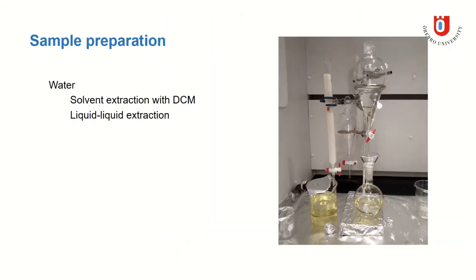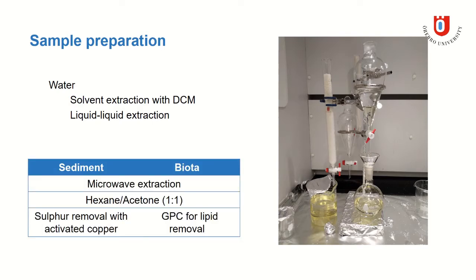Water samples were extracted using a solvent extraction with DCM for the XAD phase, followed by a liquid-liquid extraction for the remaining water phase. Sediment and biota were extracted both using microwave extraction with hexane acetone. For sediment samples, sulfur was removed with activated copper, and for biota, lipids were removed using gel permeation chromatography.